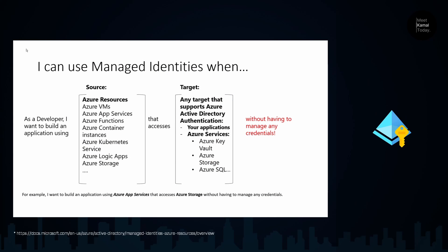This is an image from Microsoft documentation. We have a source and a target — both Azure resources. The source resources could be an Azure Virtual Machine, App Service, Function App, or many other Azure services. Usually, the target resources are some kind of storage resource and sources are compute resources. The target resource could be an Azure Key Vault, Azure Storage, or Azure SQL. With managed identities, you can communicate from these source resources to the target resources.